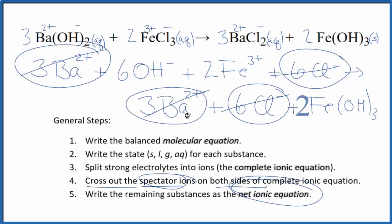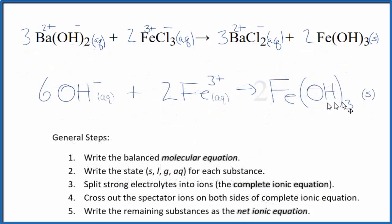I'll clean this up, write the states, and we'll have our net ionic equation. So this is the balanced net ionic equation for Ba(OH)2 plus FeCl3.